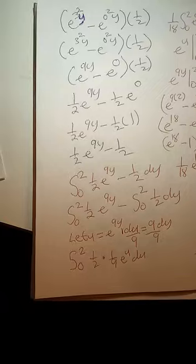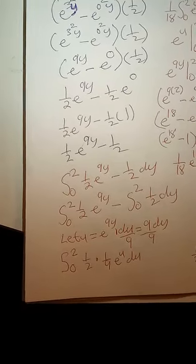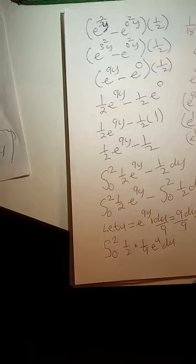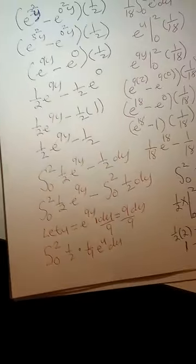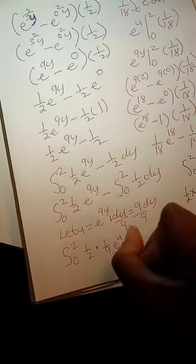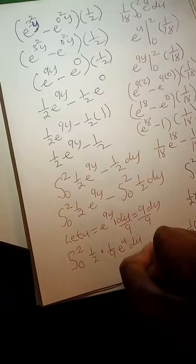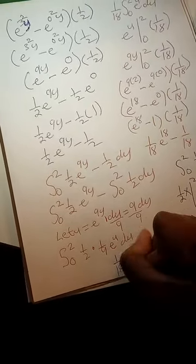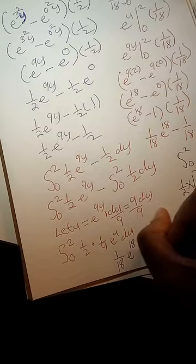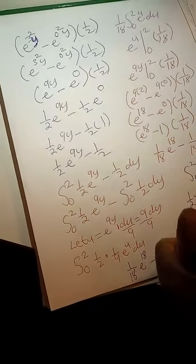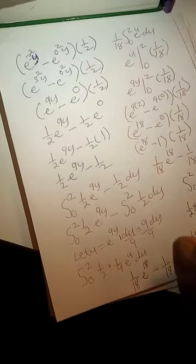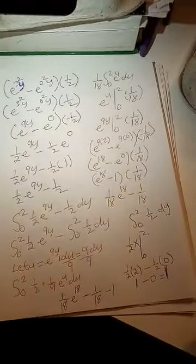And 1 minus 0 equals 1, and this comes after the minus sign. So the solution will equate to 1 divided by 18 times e to the 18, minus 1 divided by 18, minus 1. And this is our integrated solution.